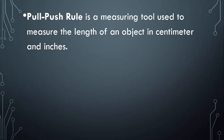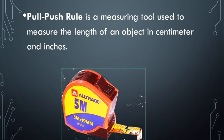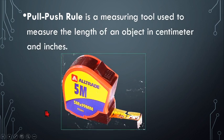Next we have the pull push rule — like a tongue twister — a measuring tool used to measure the length of an object in centimeters and in inches.